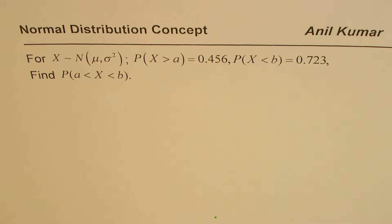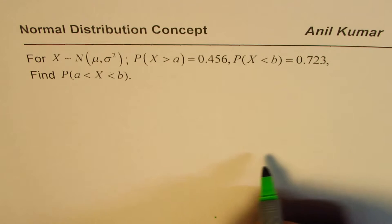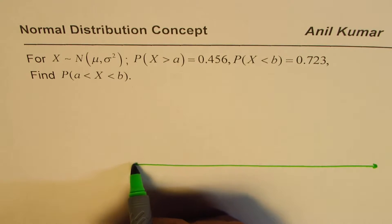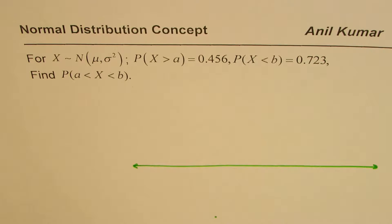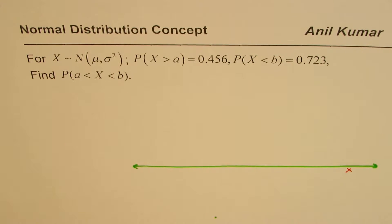At times in a test you may get lost with such questions, and therefore I hope this video will be important for you. Let us try to visualize what we are given. I'll make a big diagram so we understand what we are trying to figure out. This horizontal line represents where the random variable X can have any value — it represents all small x values, which are the set of real numbers.